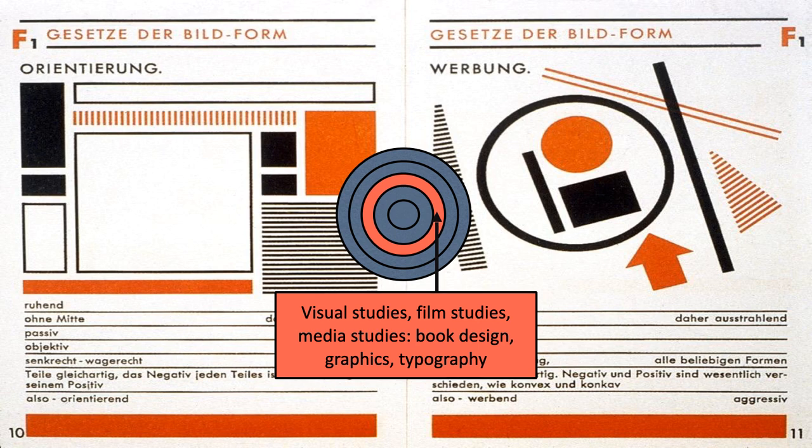So the bullseye of art history and aesthetics — in other words art history and art theory — and the first ring around the bullseye which is visual studies, and then this outer ring which includes that but also goes beyond it: these would be the things that have been seen as part of the expansion of the academic study of the visual world.